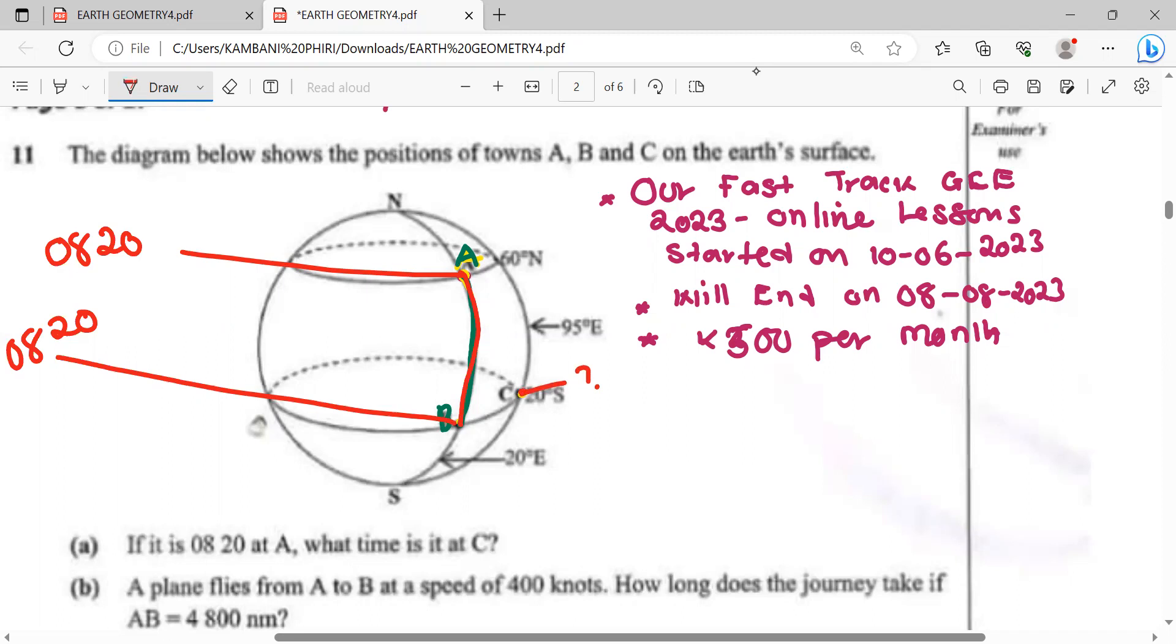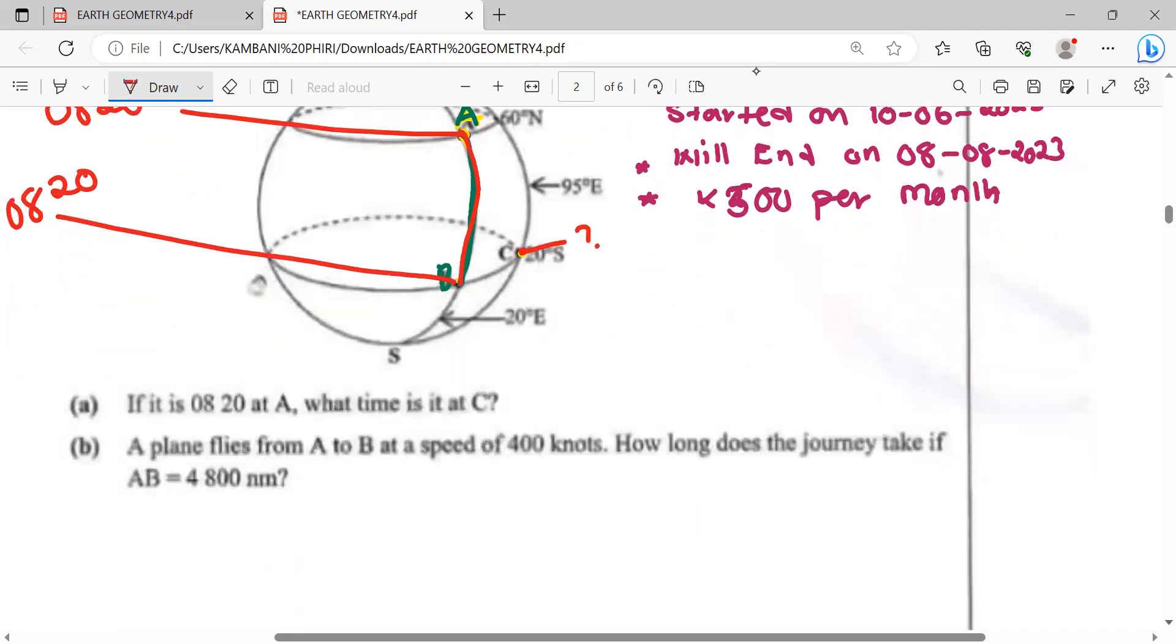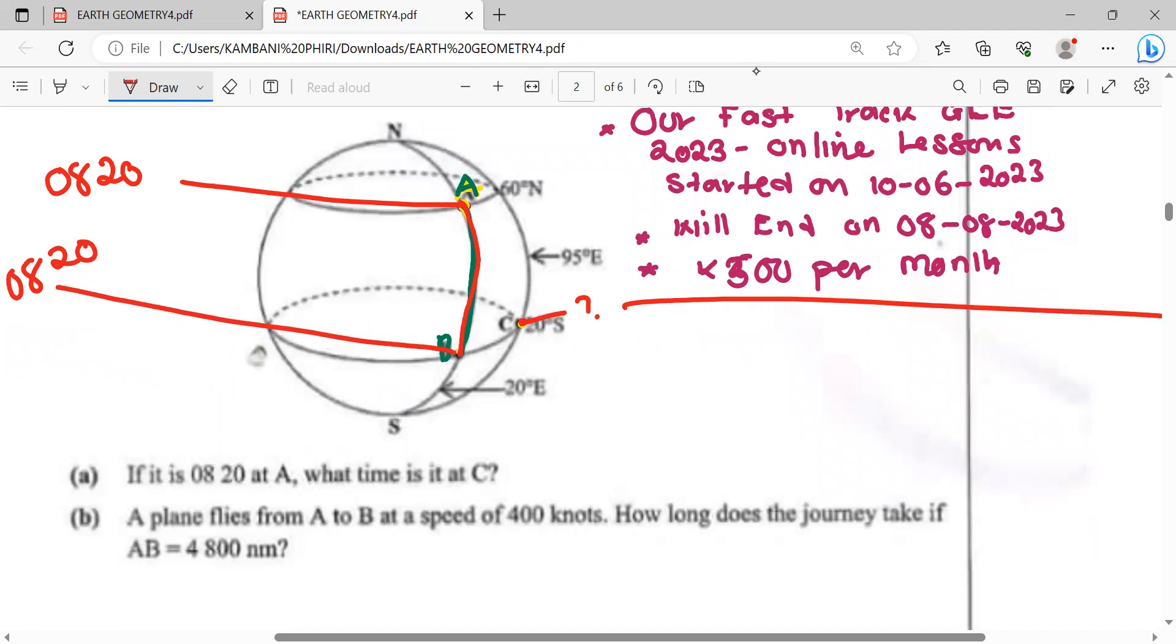To find time, first we find the difference in longitude between B and C. If you look at the longitude for B, it is 20 degrees east, and for C the longitude is 95 degrees east. Since these two points are on the same side of the prime meridian, we subtract: 95 minus 20, which gives us 75 degrees.